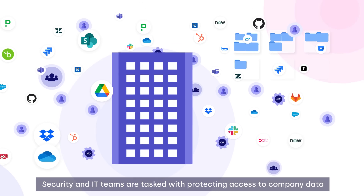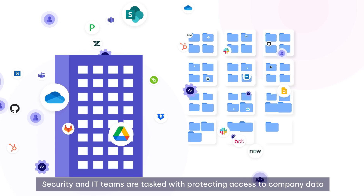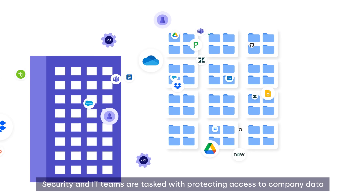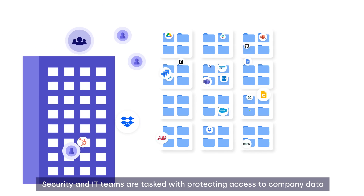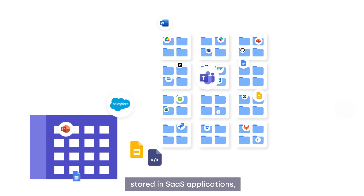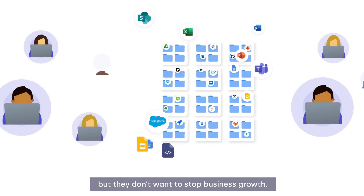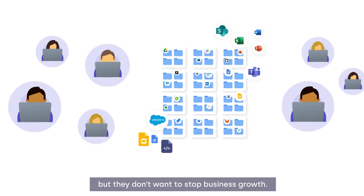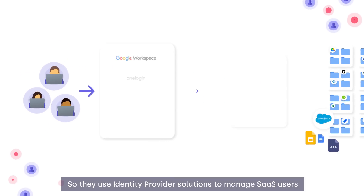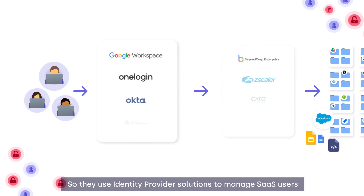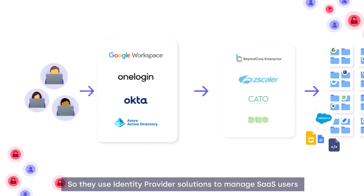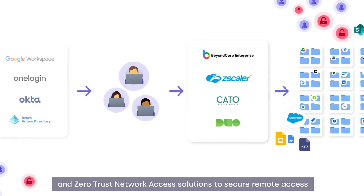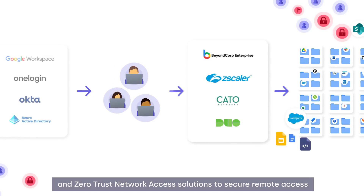Security and IT teams are tasked with protecting access to company data stored in SaaS applications, but they don't want to stop business growth. So they use identity provider solutions to manage SaaS users, and zero-trust network access solutions to secure remote access.